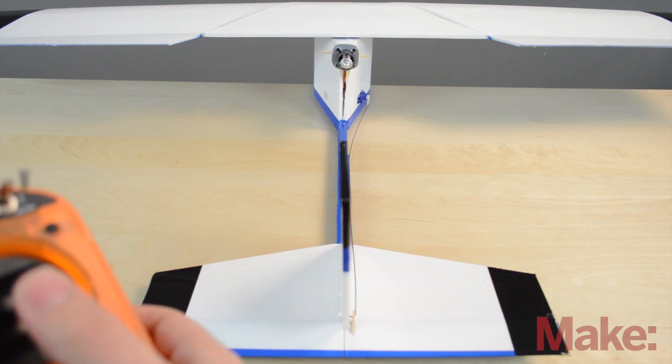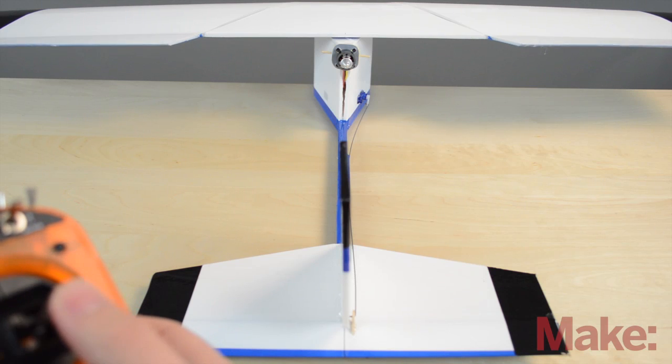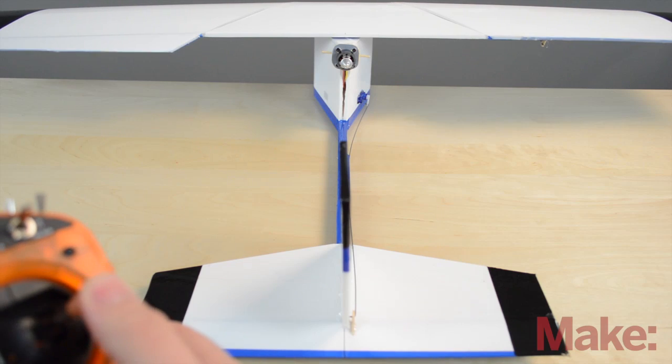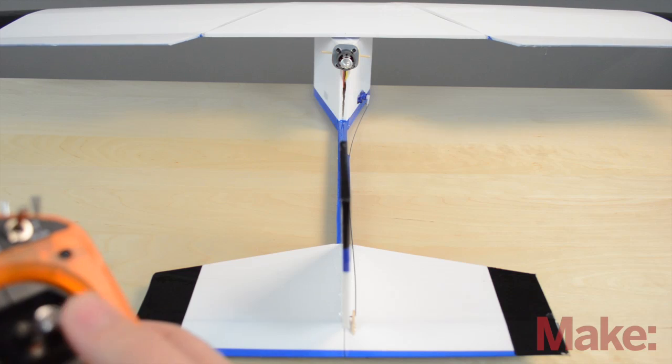For the ailerons it's the same way. They move slightly in the middle to give you more control, and then they go 50 percent each way for like this.